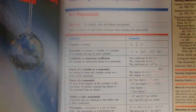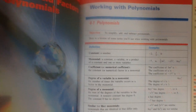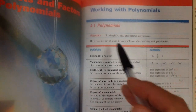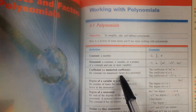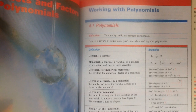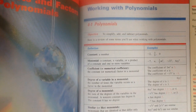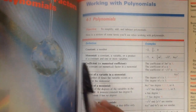Let's go to page 167. This is Lesson 4-1, and this lesson is to simplify, add, and subtract polynomials. So let's go to some definitions.